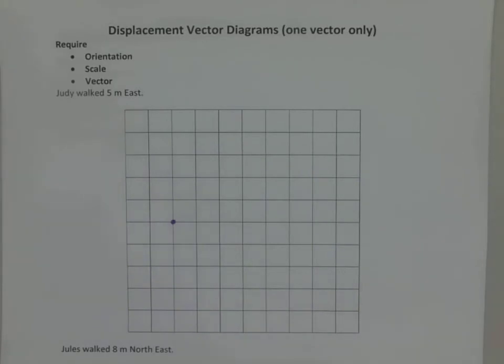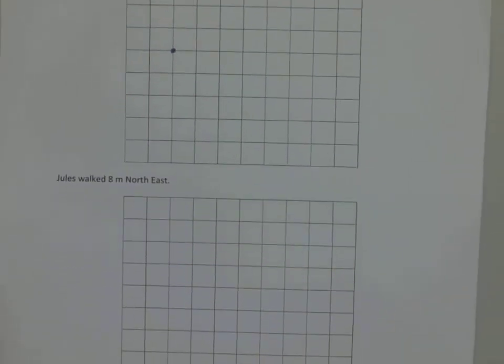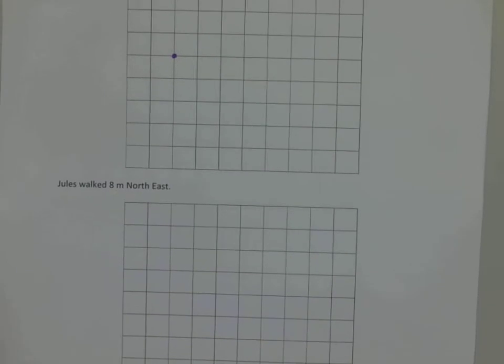Hi everyone. This is a very short video on how to draw a displacement vector, just a single displacement vector. I've got two examples to show. Judy walked five meters east and Jules walked eight meters northeast.